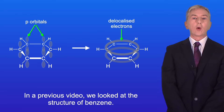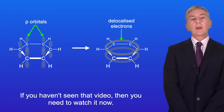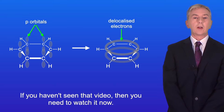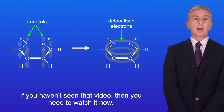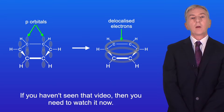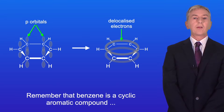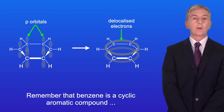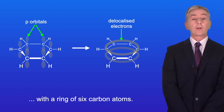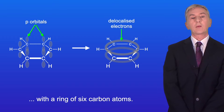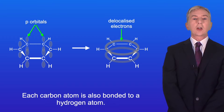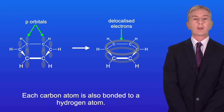In a previous video we looked at the structure of benzene, and if you haven't seen that video then you need to watch it now. Remember that benzene is a cyclic aromatic compound with a ring of six carbon atoms, and each carbon atom is also bonded to a hydrogen atom.